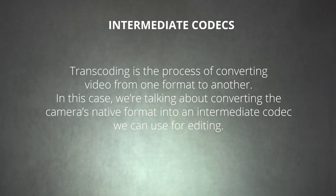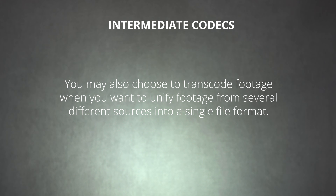Transcoding is the process of converting video from one format to another — in this case, converting the camera's native format into an intermediate codec we can use for editing. This is sometimes necessary if your editing software doesn't support your camera's native file format. However, you can also use transcoding to convert a resource-hungry format like H.264 into a friendlier format like ProRes without losing quality or resolution. Finally, you may also choose to transcode footage when you want to unify footage from several different sources into a single file format.